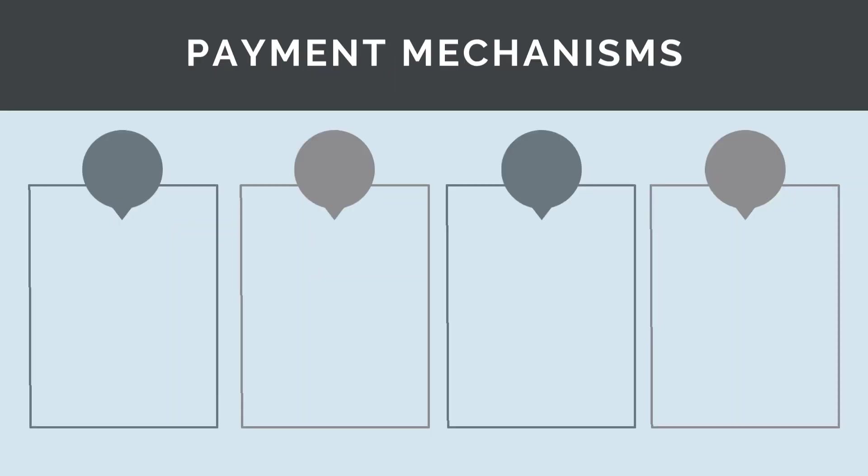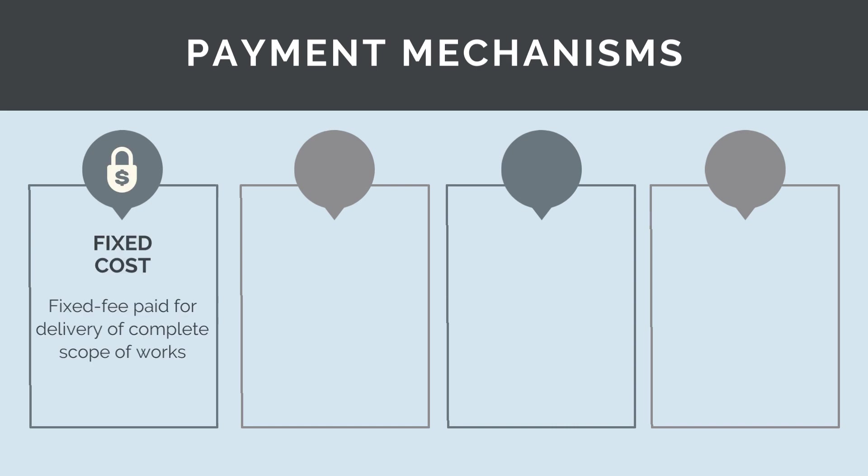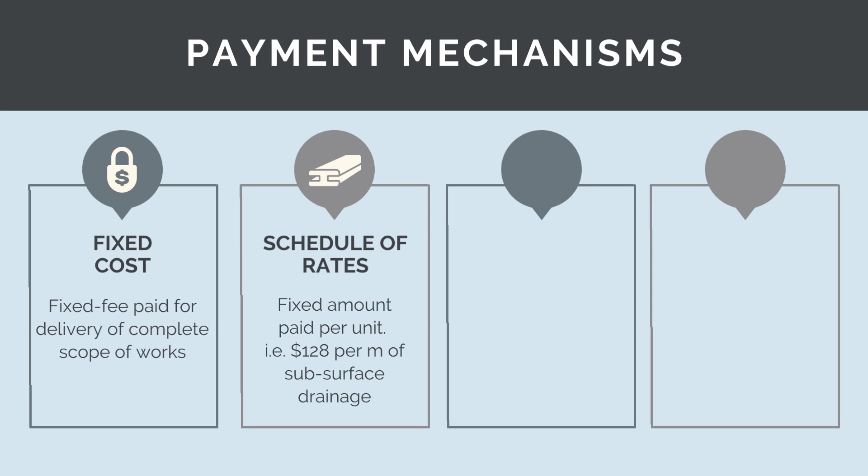The four types of payment mechanisms we encounter are: fixed costs, where a fixed fee is paid for the delivery of a complete scope of works — during procurement, a contractor will quote a scope of works and then deliver it. Schedule of rates are similar to fixed fee contracts, but the quantum of work is variable. Contractors will quote a unit rate — for example, a price per lineal metre of subsurface drainage supplied and installed — and the contractor will then be paid based on how many lineal metres they install.